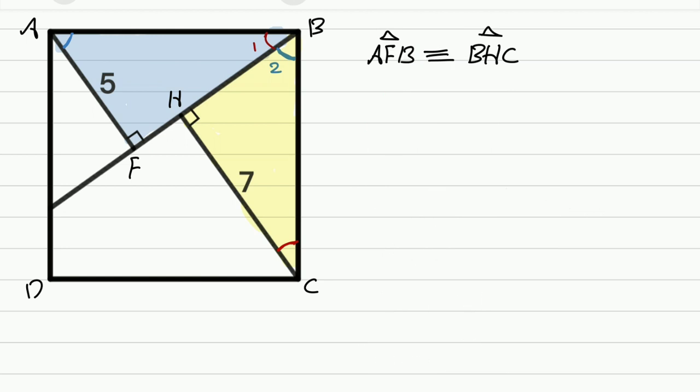Now we did all of that to reach this point that we can say BH is the same size as AF and that's 5 because they are the correspondent sides of two congruent triangles. Now BH is 5.